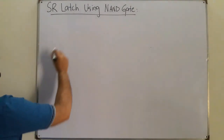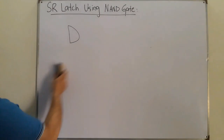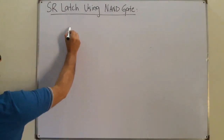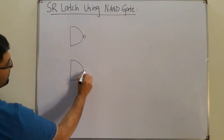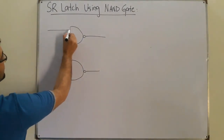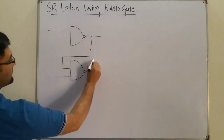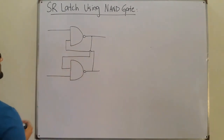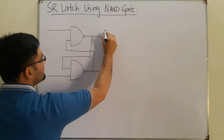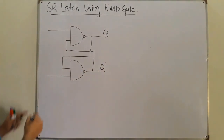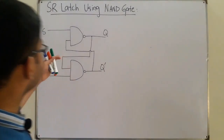I draw the structure of the SR latch over here. It has one input here, one input over here, feedback here again, and feedback to the first gate. The similarity is this is Q and this is Q complement. The difference from the NOR gate version is the interchange of S and R positions in this latch.